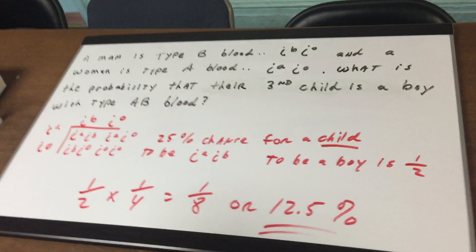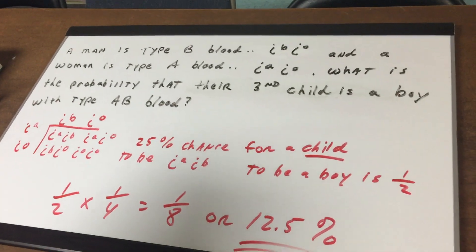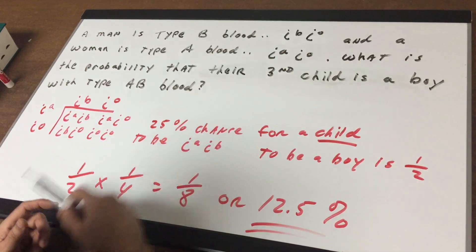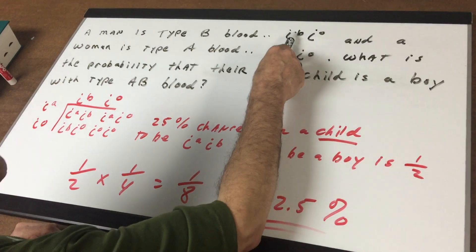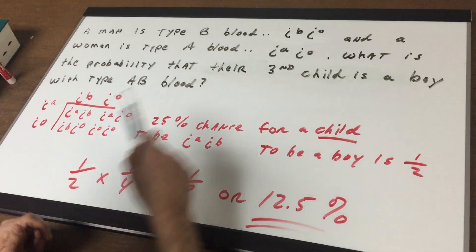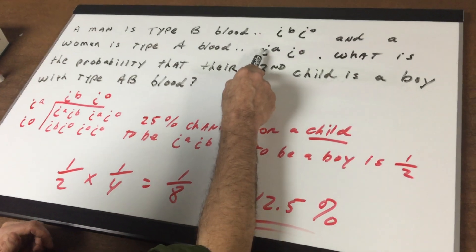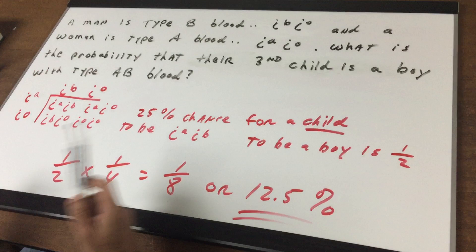I say to you that a man is type B blood and we write the type B blood as IB IO. So as you can see, you are heterozygous and the woman is type A blood and I write to you IA and IO.